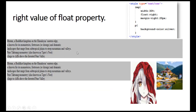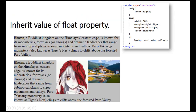The third value is right. You can also float your image to the right. You can see here what happens when you use the right value of the float property — the image which was on the left is now floated to the right side. This is the output when using the right value of the float property.